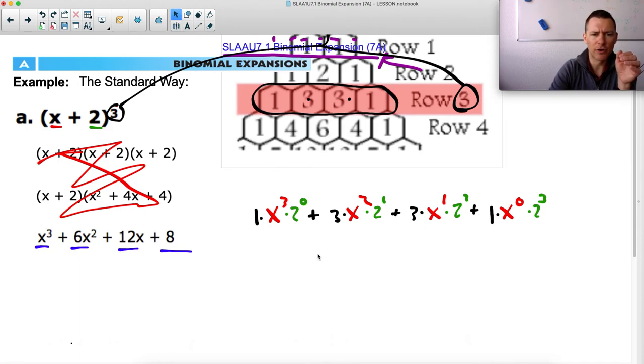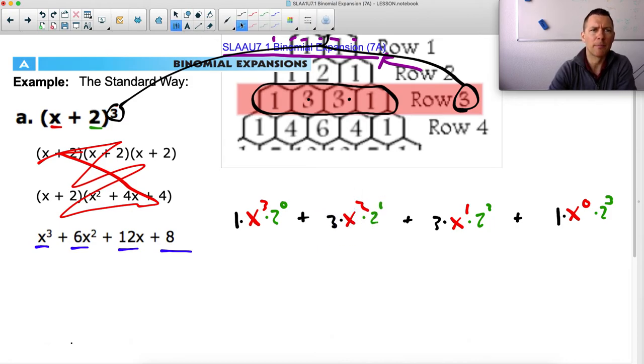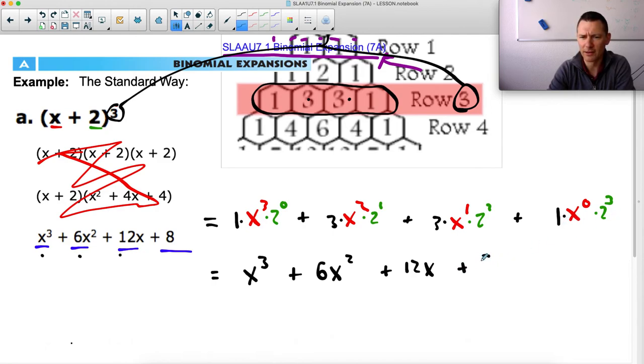So this gets kind of convoluted, but if you try to keep it like spread out a little bit like this as you're writing, it makes it a lot easier. Put big spaces between the plus signs so you can see everything kind of spread out nicely. All right. So now clean it up. So this will turn into one times x cubed times another one. That's just x cubed. Here's three times x squared times two. So three times one set of two. So that's six and an x squared. Here's three times two squared is four. So that's 12 and a single x. And one times one times two to a third is just eight.